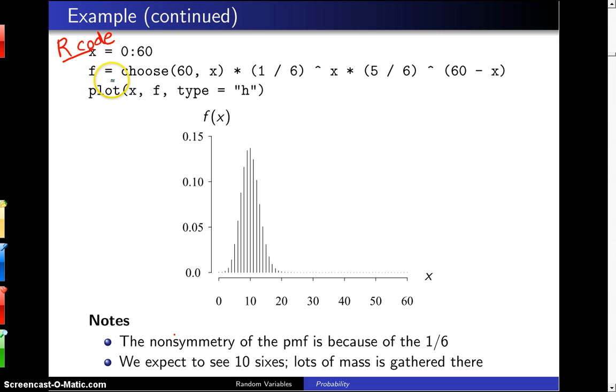And then the next step is to set the vector F to 60 choose X times one-sixth to the X times five-sixths to the 60 minus X.